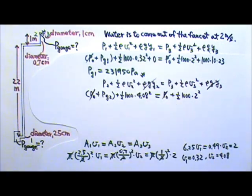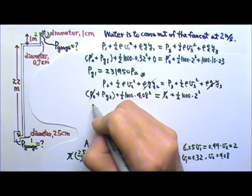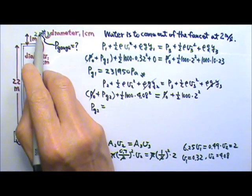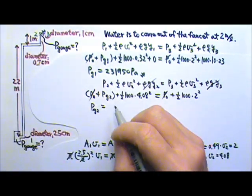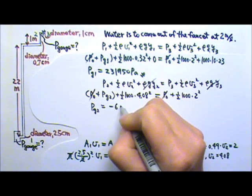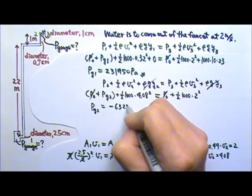So P0 cancels and we have enough information to find the gauge pressure at 2 in the pipe right before the faucet. This will be negative 6,323 Pa.